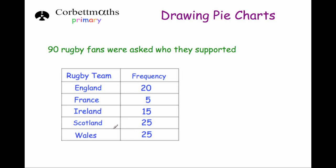To draw a pie chart there are some steps to follow. The first step is to add up how many people there are in total, or to add up the frequencies. In this question that's been done for us — we know the answer is equal to 90 — but sometimes you might need to add them up yourself.